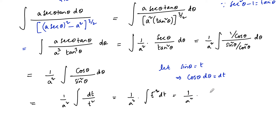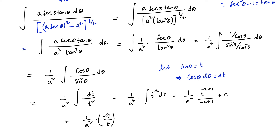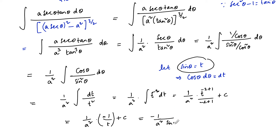(1/a²) times the integral of t^(−2) gives t^(−2+1) upon (−2+1) + C, which is (1/a²)·(−1/t) + C. Substituting back t = sin(θ), we get (1/a²)·(−1/sin(θ)) + C.